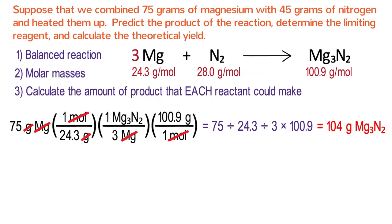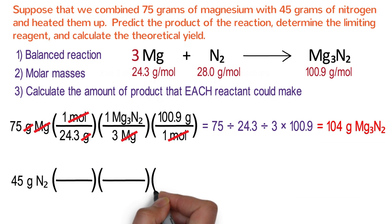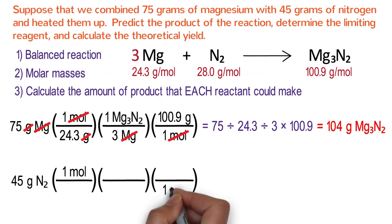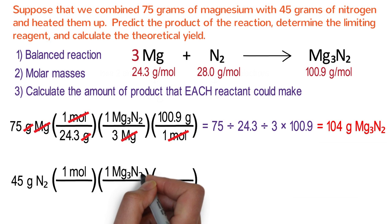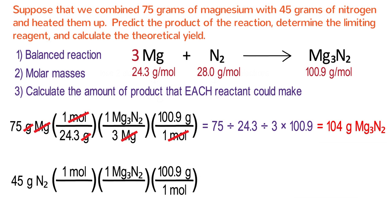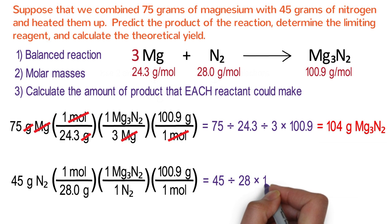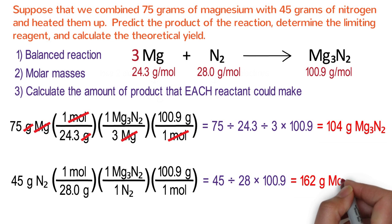Next, repeat this process for nitrogen. Write 45 grams of nitrogen and multiply by three conversion factor fractions. The numerators are the same as before: one mole top left, 1 Mg₃N₂ in the middle top, and 100.9 grams on the top right. The only differences are the denominator values for the reactant: 28 grams of N₂ on the bottom left, and 1 N₂ from the balanced reaction in the bottom middle. Calculating: 45 ÷ 28 × 100.9 = 162 grams of magnesium nitride.